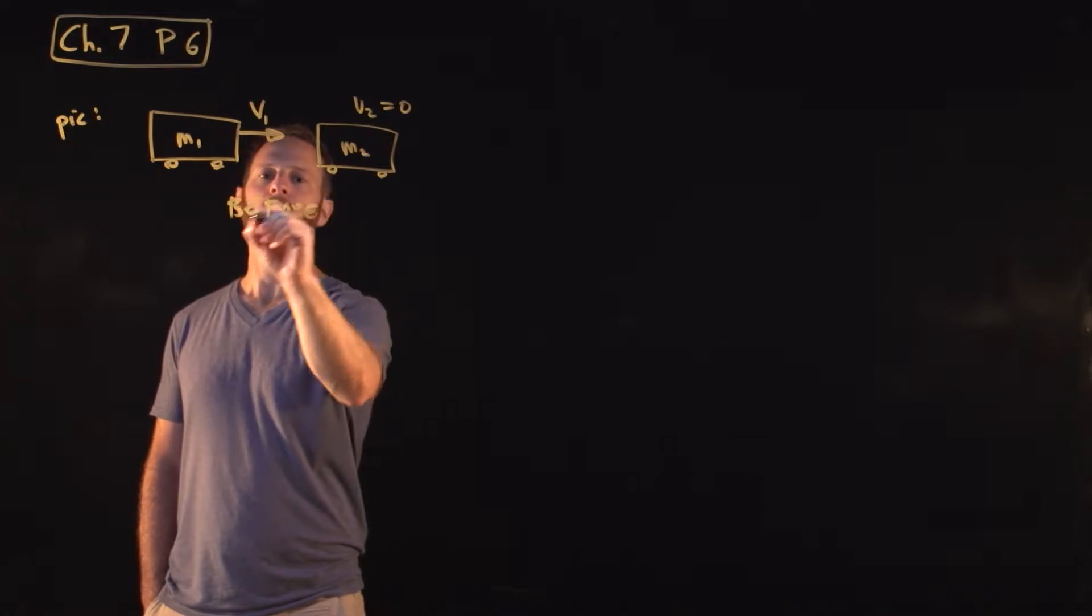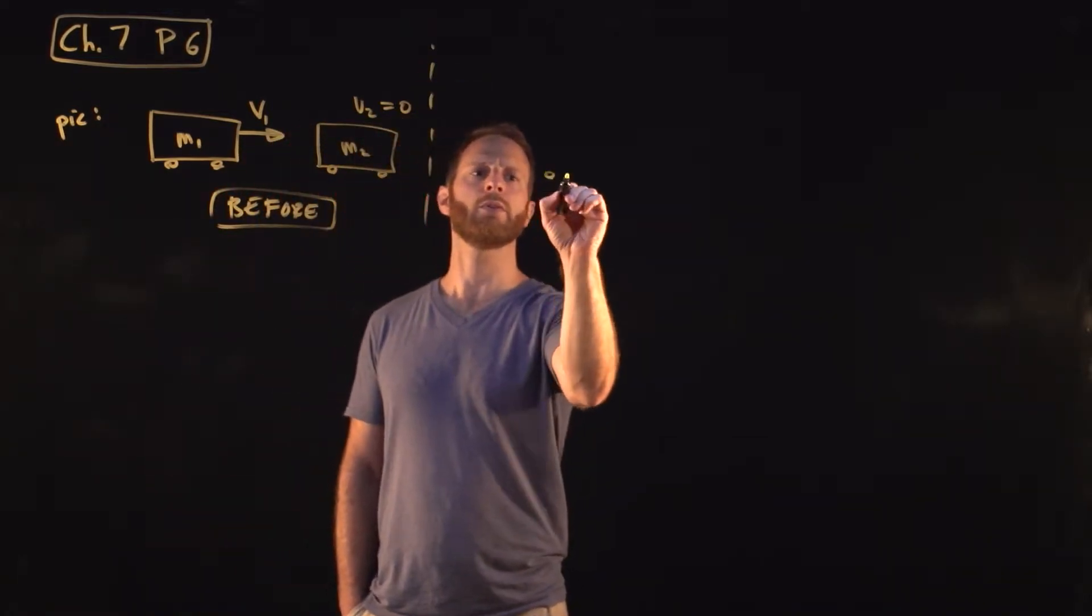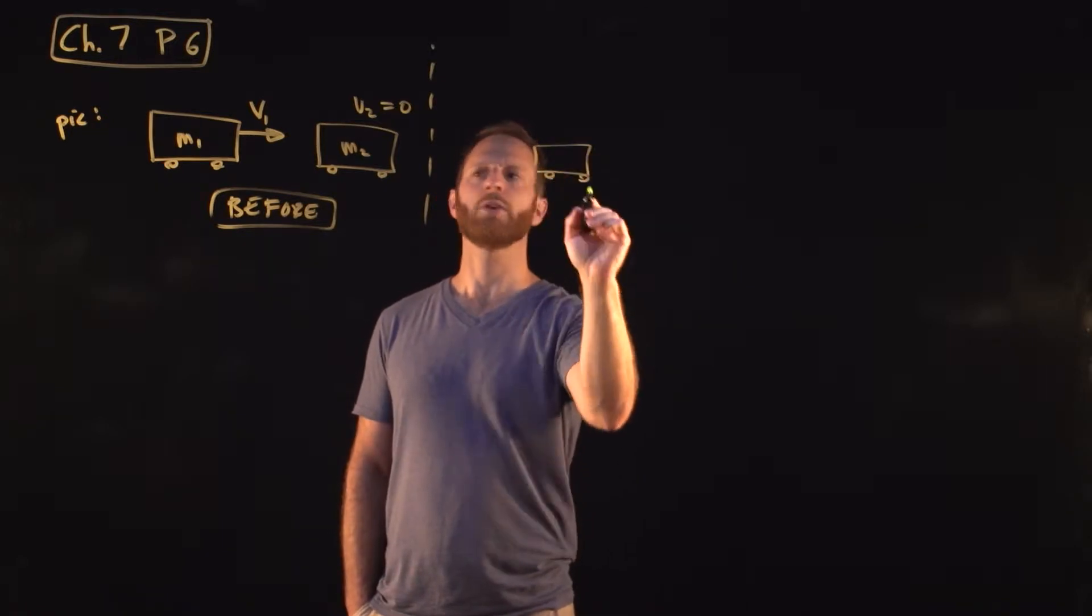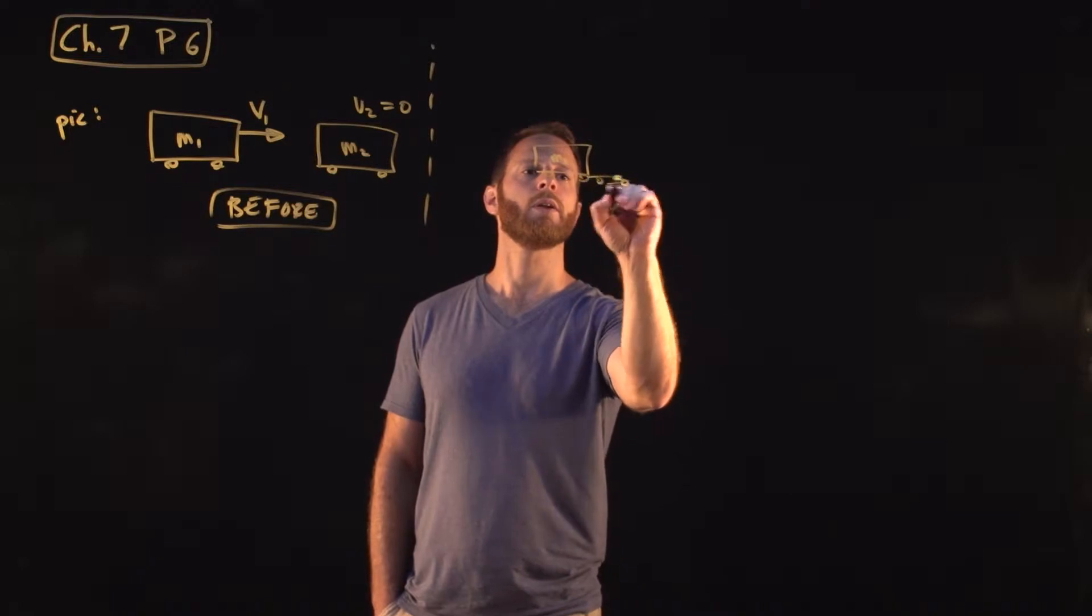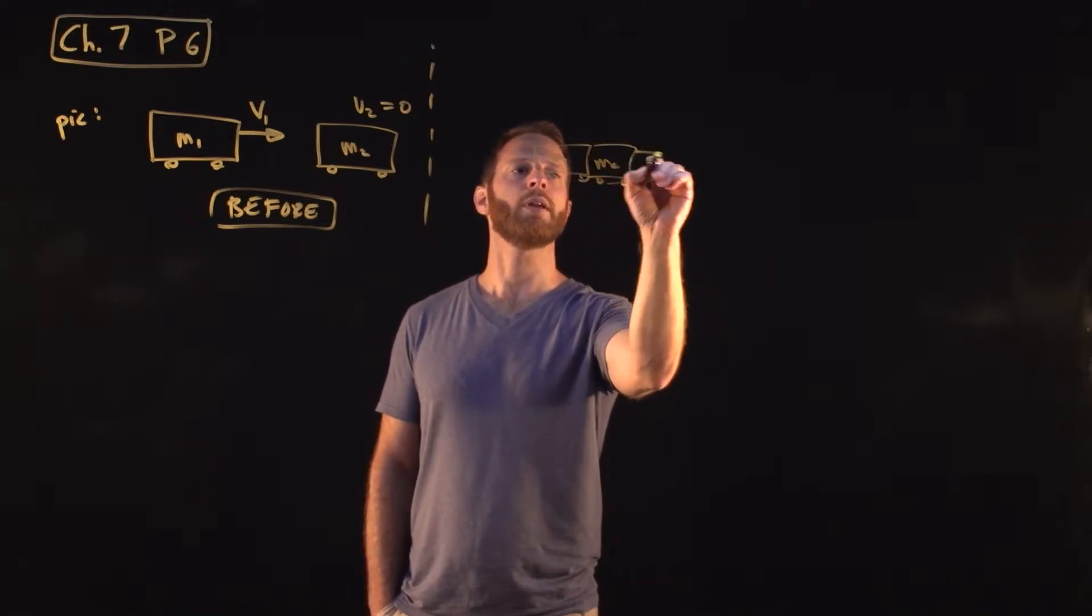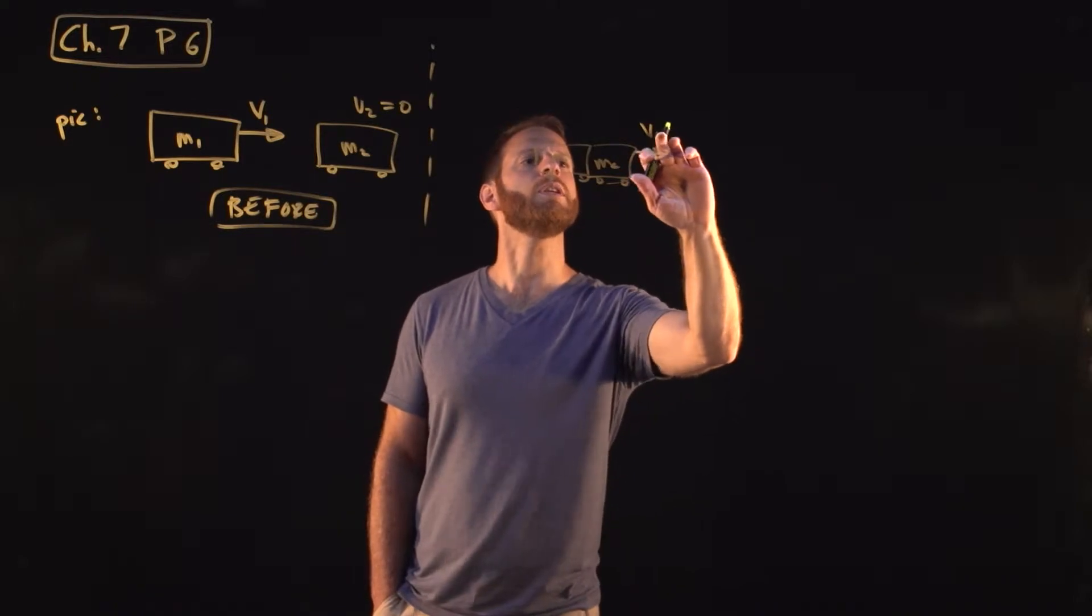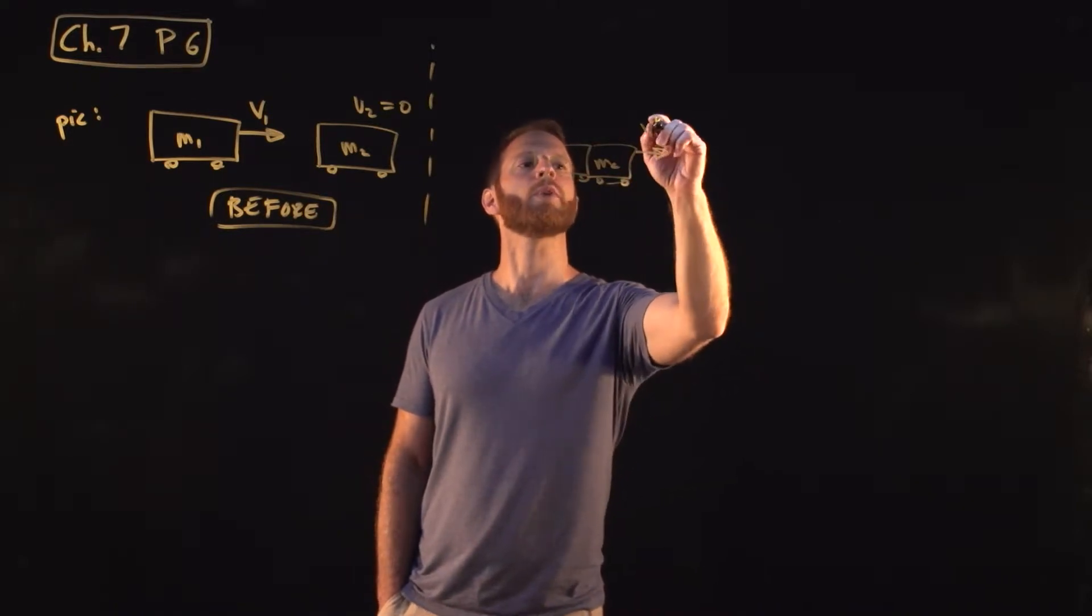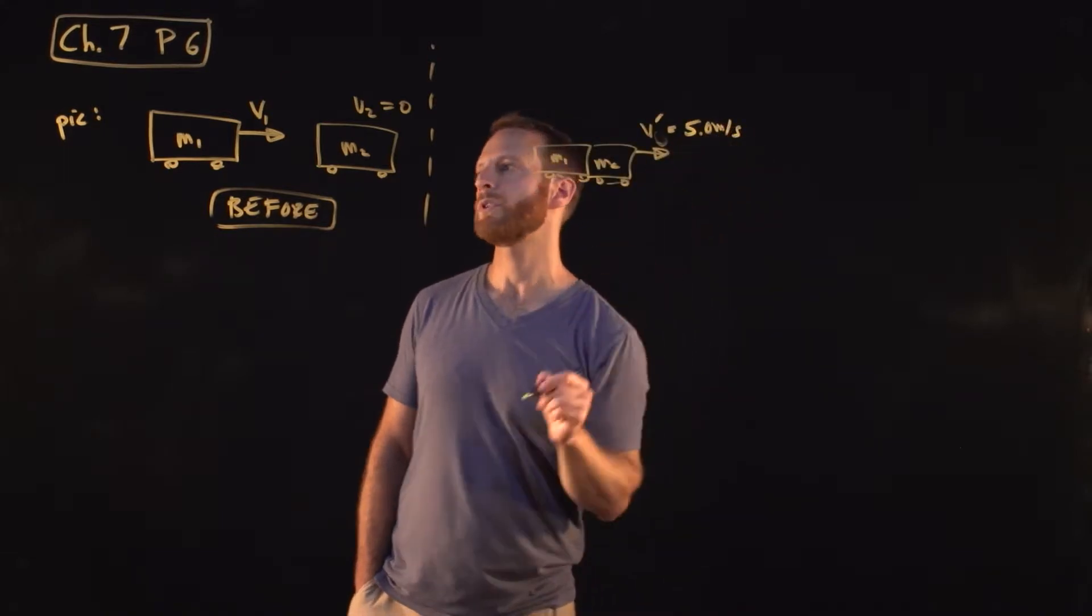Afterward, they collide and stick together, so, you know, they also shrunk apparently. Here's M1, and here is M2, and they now move at some other velocity. We'll call this V, V prime. Okay, they move off at V prime, which is 5 meters per second.